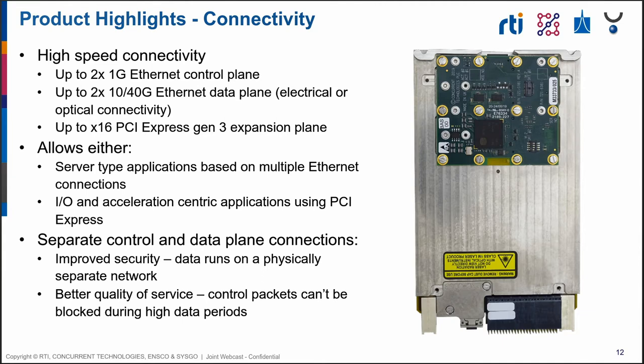Moving on to connectivity — another main benefit with these boards is the high-speed network connectivity available, ideal for today's demo. We have two high-speed Ethernet planes: a control plane with up to one gigabit Ethernet interfaces, and a data plane with either 10 or 40 gigabit Ethernet interfaces, which can be electrical or optical. This separation of the two planes allows for improved quality of service and security of your packets.